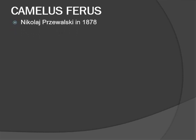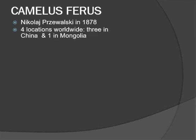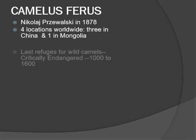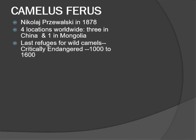Camelus ferus was discovered in 1878. Nowadays their range has become severely reduced to only four locations worldwide: three in China and one in Mongolia. These are now the last refuges of the wild camels, which are listed as critically endangered, as estimates for the numbers of remaining animals range from only 1,000 to 1,600.